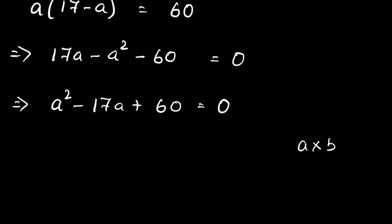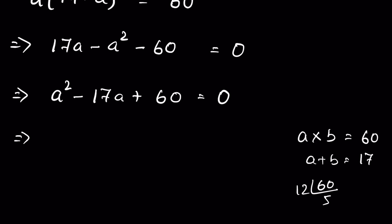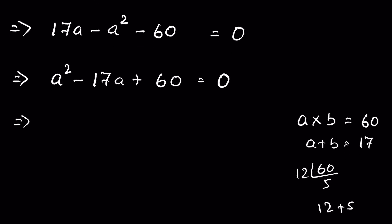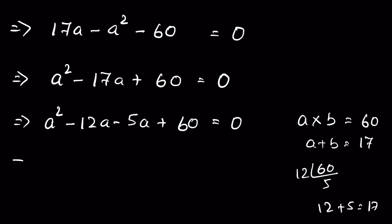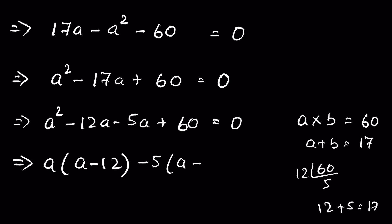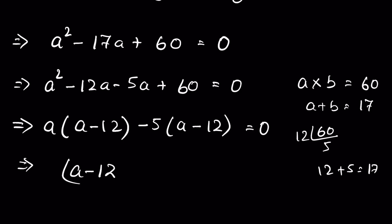We need two numbers whose product is 60 and whose sum is 17. So 12 times 5 is 60 and 12 plus 5 is 17 — the two numbers are 12 and 5. We write: a squared minus 12a minus 5a plus 60 equals 0, taking a common: a(a minus 12) minus 5(a minus 12) equals 0. So (a minus 12)(a minus 5) equals 0.